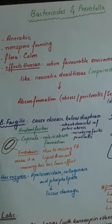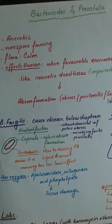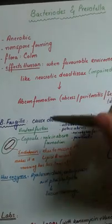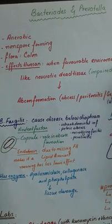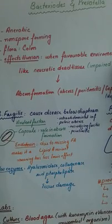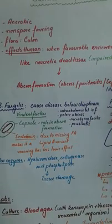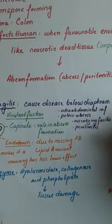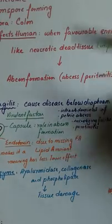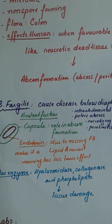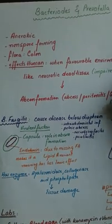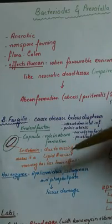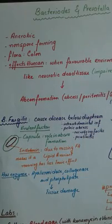Regarding B. fragilis virulence factors: it has a capsule which plays a role in abscess formation in the pelvis, abdomen, or anywhere else. It is a gram-negative organism so it also has an endotoxin, but its endotoxin is not very potent because it is missing a fatty acid, making it a lipid A variant that is less toxic. It causes tissue destruction by secreting enzymes such as chondroitinase, collagenase, and phospholipase.